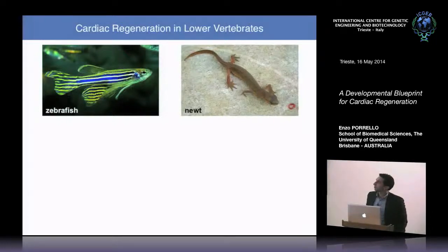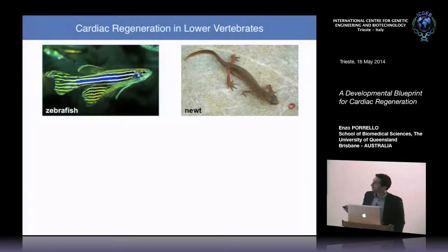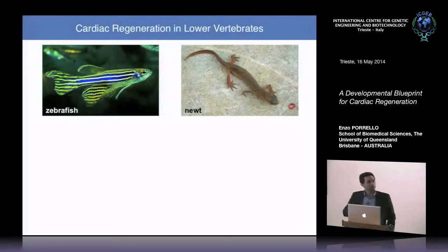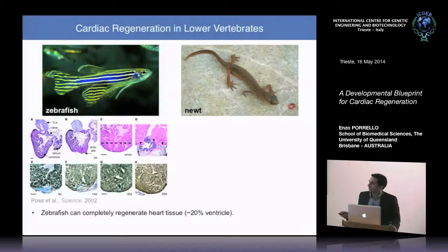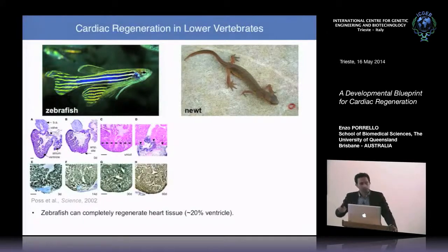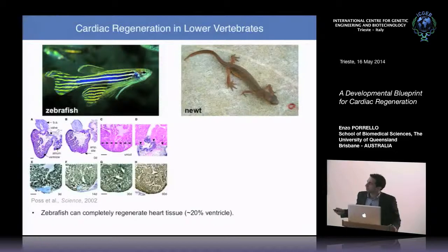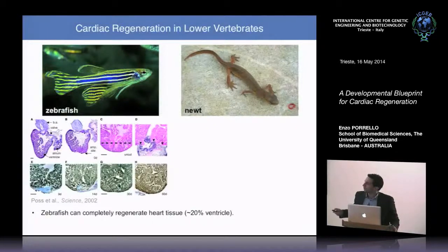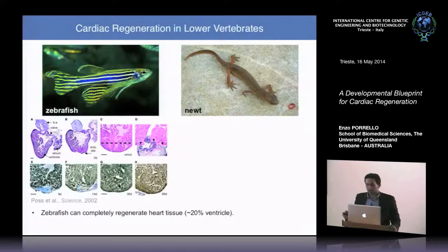We've been inspired by work in the zebrafish and salamander, which are highly regenerative organisms capable of regenerating entire fins, limbs, and organ systems throughout life. In a landmark study by Ken Poss and Mark Keating, they showed the adult zebrafish heart can completely regenerate following apical resection injury — removal of about 20% of the ventricular apex — with full replacement of lost cardiomyocytes and restoration of cardiac function over 60 days.